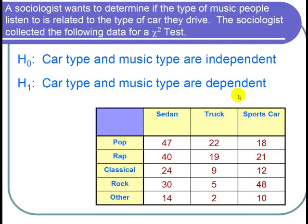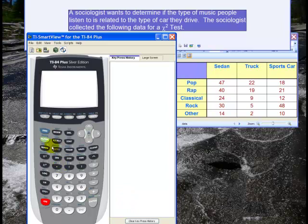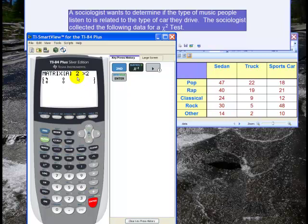So now let's use a calculator to find out the p-value related to this hypothesis test. Here's the calculator and I want to enter the data. For a chi-squared test for independence we use a matrix. So I go second matrix right here, and then I go to edit and enter.